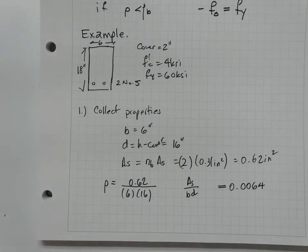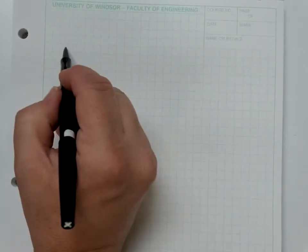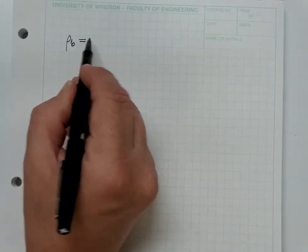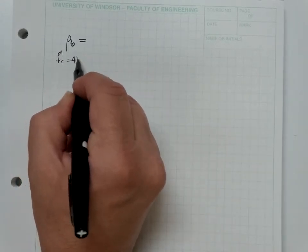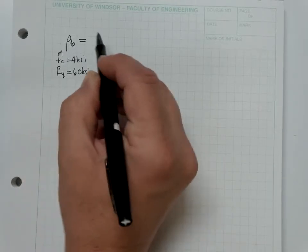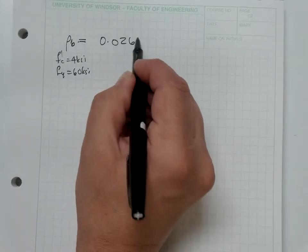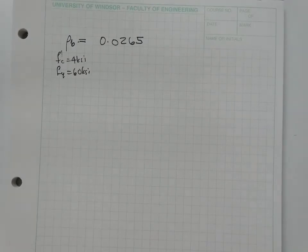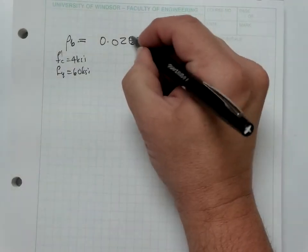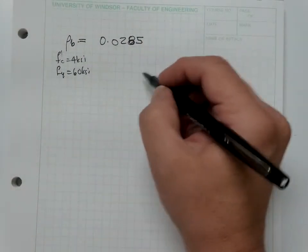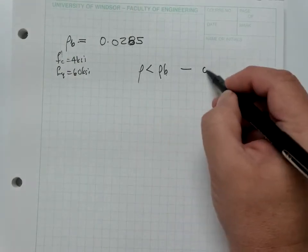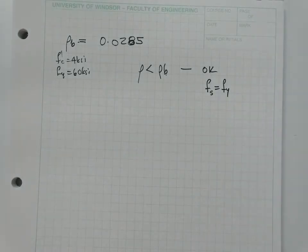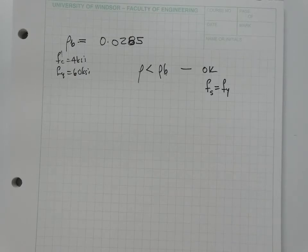From a table of values, rho_balanced for F'_c equals 4 ksi and F_Y equals 60 ksi is 0.0265. Since rho (0.0064) is less than rho_balanced (0.0265), the steel is going to yield. We no longer have to make the assumption and then check if it's valid — we can verify validity first, which saves computation.